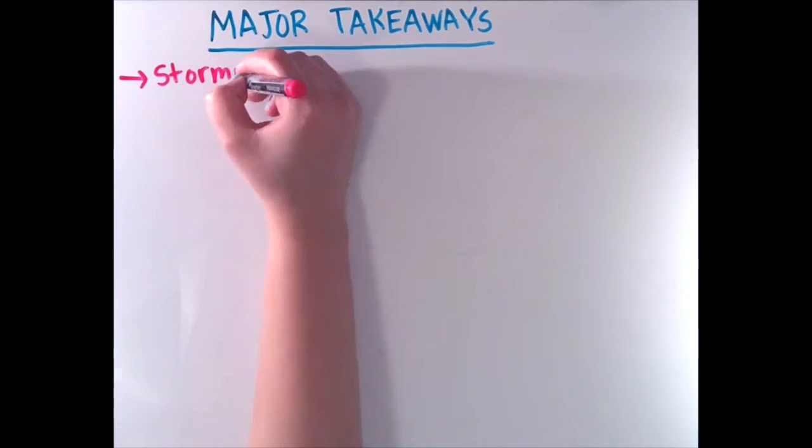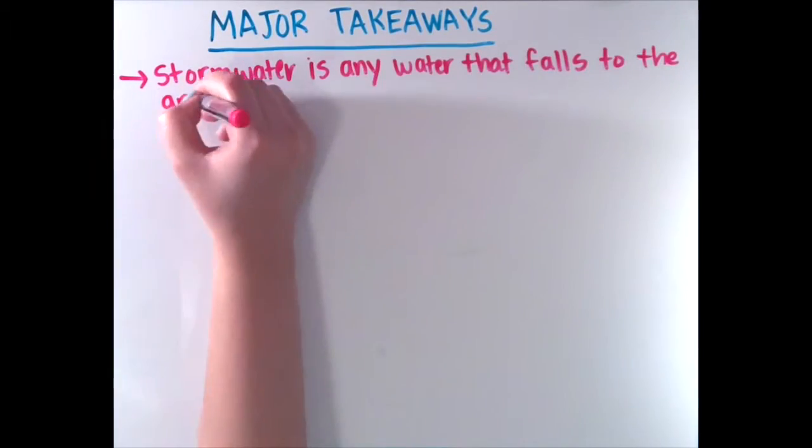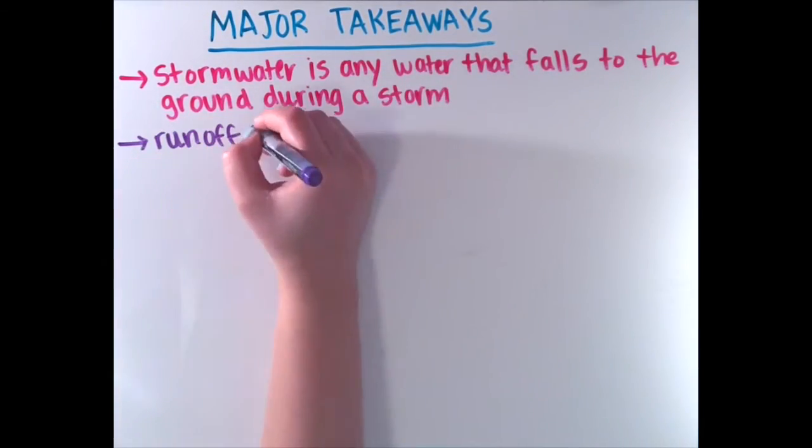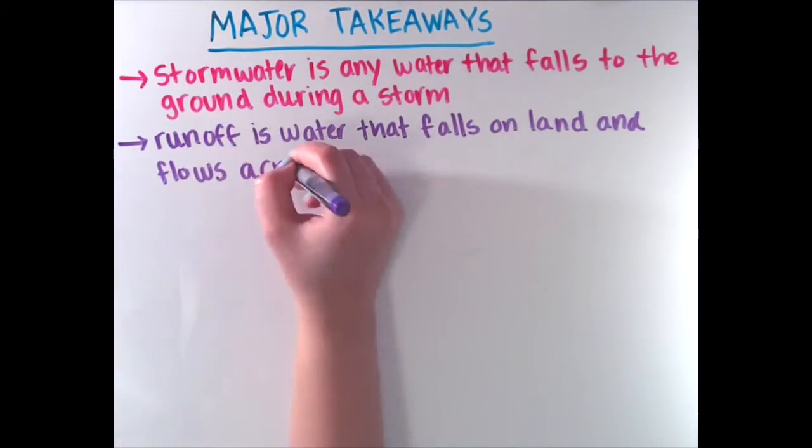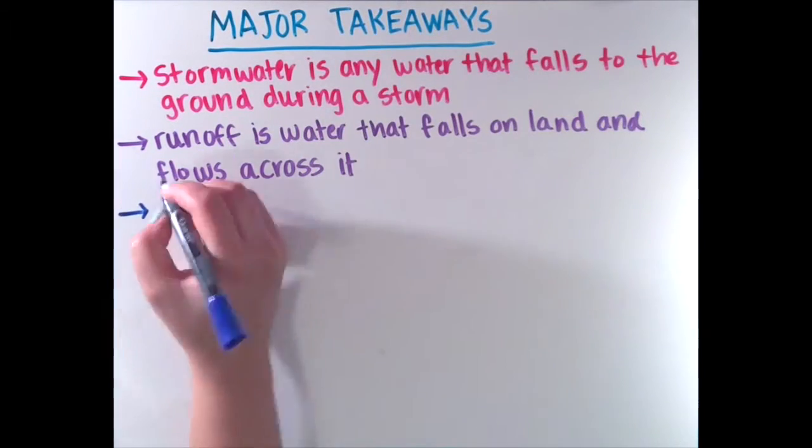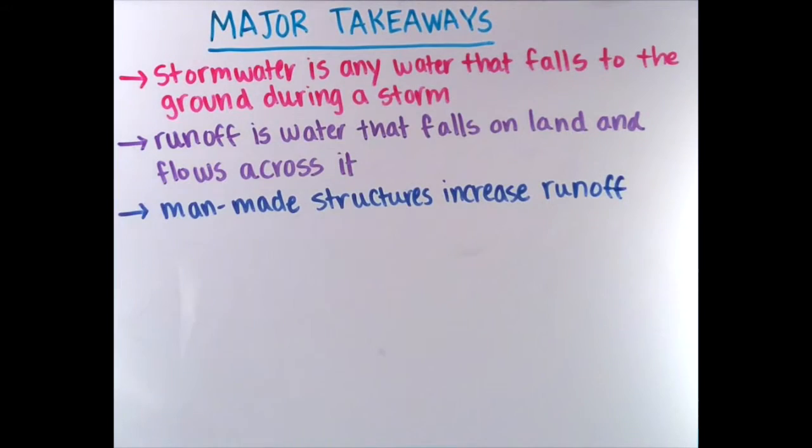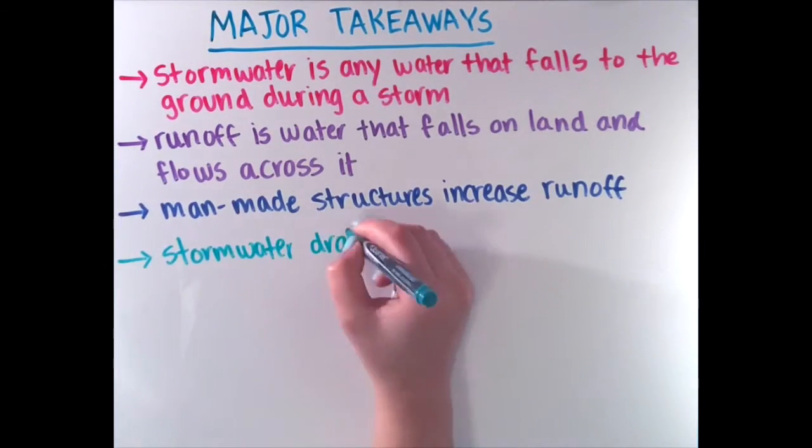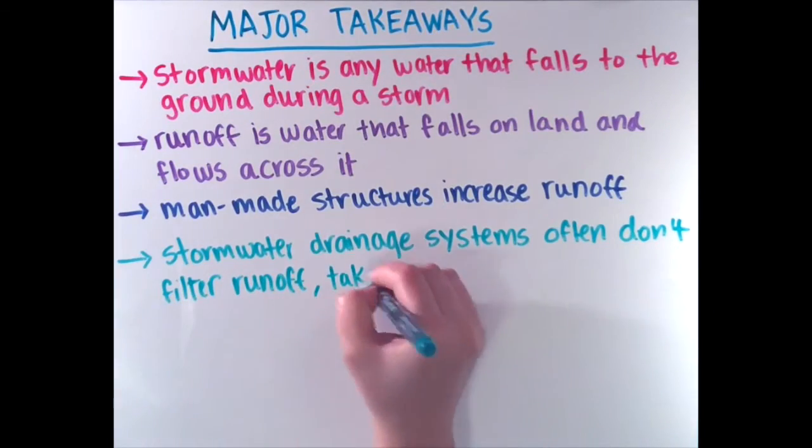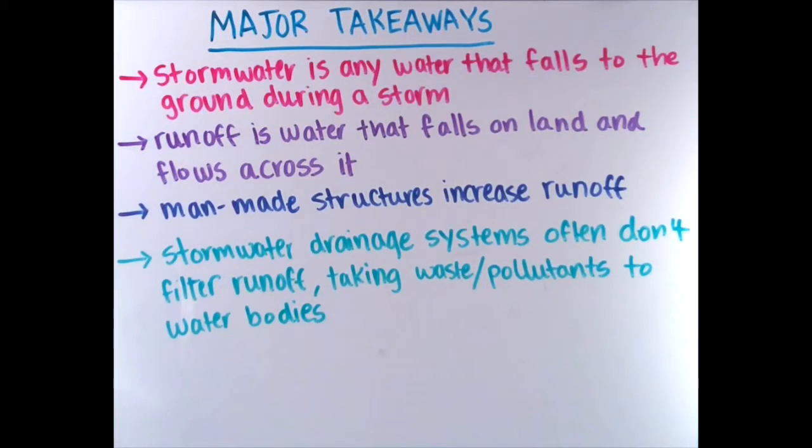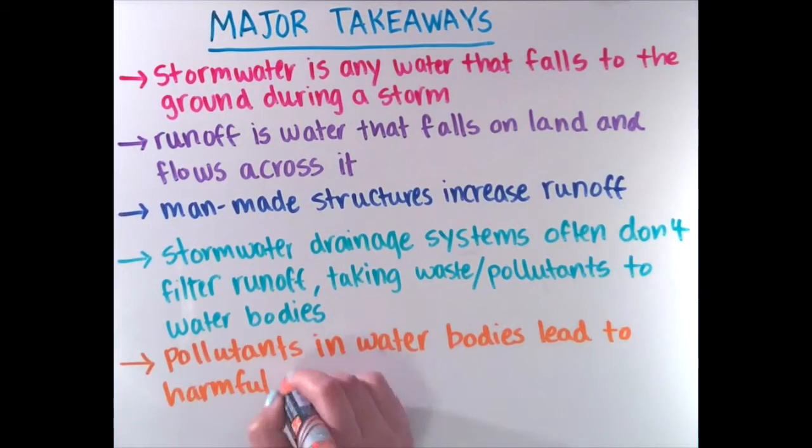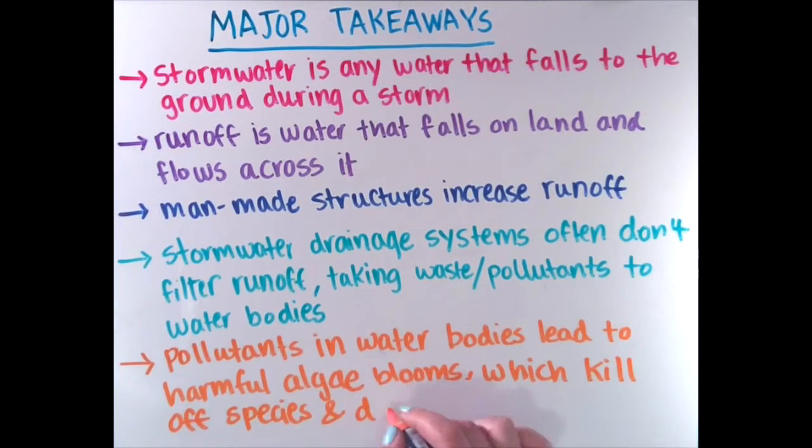In conclusion, stormwater is any form of water that falls to the ground during a storm. Runoff is water that falls on land and flows across its surface. Manmade structures increase the amount of stormwater runoff. Stormwater drainage systems often don't filter runoff and end up taking waste and pollutants into water bodies. And finally, pollutants and water bodies lead to harmful algae blooms which kill off species and damage healthy water ecosystems.